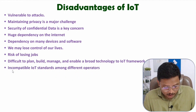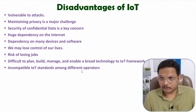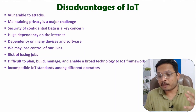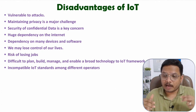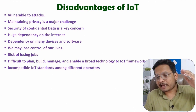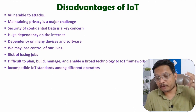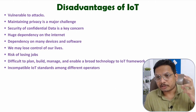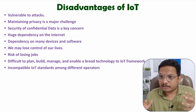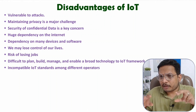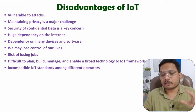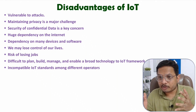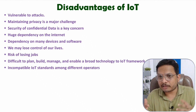There can be incompatibility with IoT standards among different operators because different operators provide services with different standards. In many countries, the standards are incompatible. For example, in Dubai where the temperature is high, device standards will be different; in Canada where the temperature can be negative, the standards for sensors also change. Regional differences and various operators lead to incompatible IoT standards. For example, the standards in Germany are different from those in India. That's why making your system compatible for users all over the world is quite challenging.